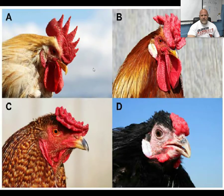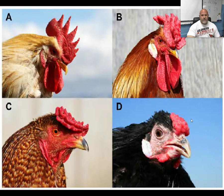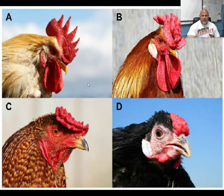Another example is in chickens. The comb on the top of their head can come in many different forms, and which form you have is dependent on which alleles you have. There are four main alleles in the population, and how those alleles combine determines how the chicken's comb looks.